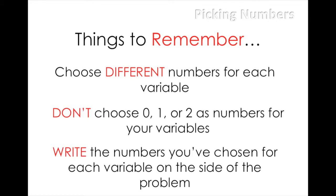Write the numbers you've chosen for each variable on the side of the problem. This seems like a simple thing but will become extremely important as the algebra becomes more complicated. You don't want to put the wrong number in for the wrong variable. That would mess the entire problem up. So get into the habit of writing the numbers down.